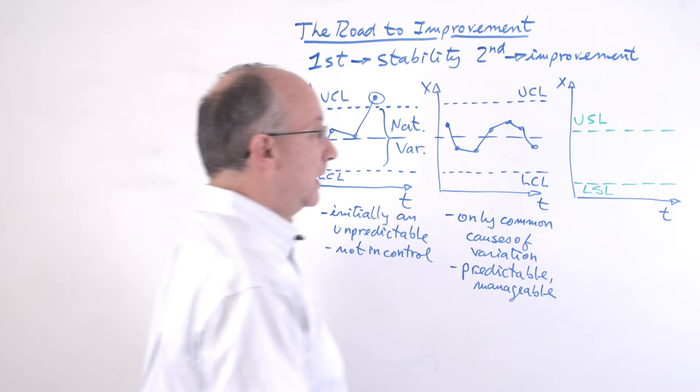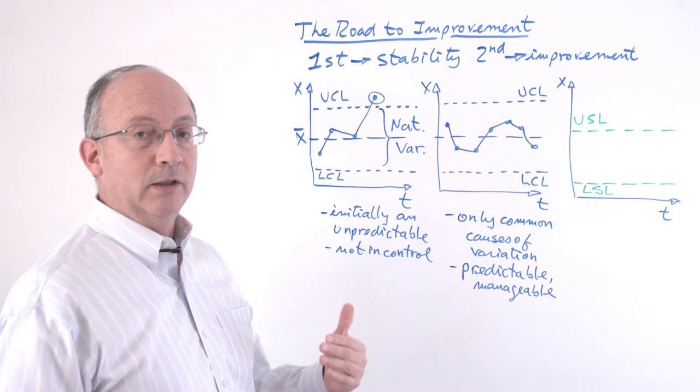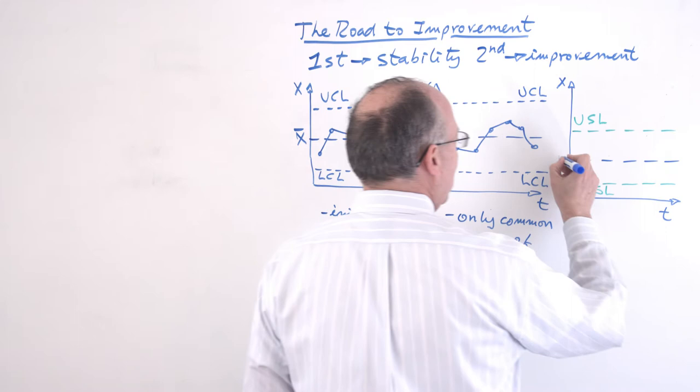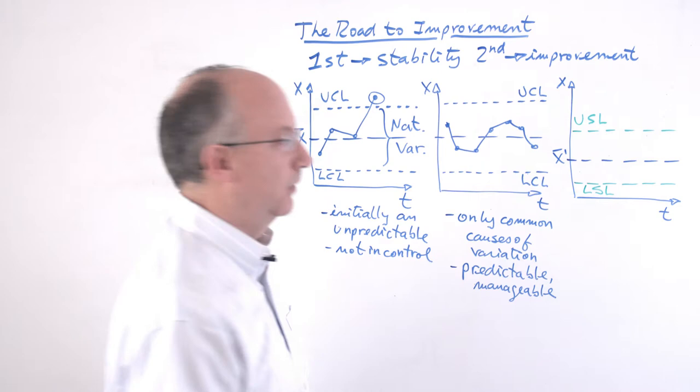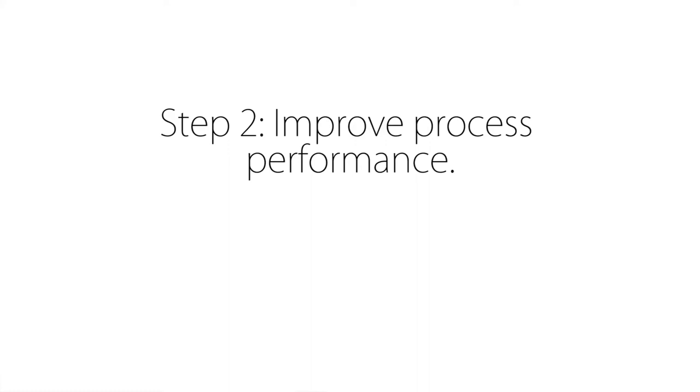Then, what we would need to do is now work in such a way that would allow us to fit these control limits to be inside of the spec limits, so that then we would be successful and capable on a sustainable basis. So, what that would mean is that we would have to have, let's say, something like this, where we would now be operating at a new average, X prime, and then we would have to also reduce the variability of our operation in such a way that the upper control limit and the lower control limit may be inside of what the specifications have to be.